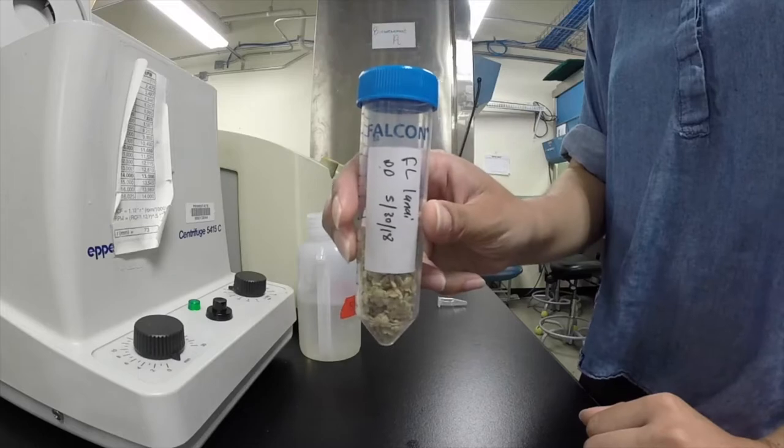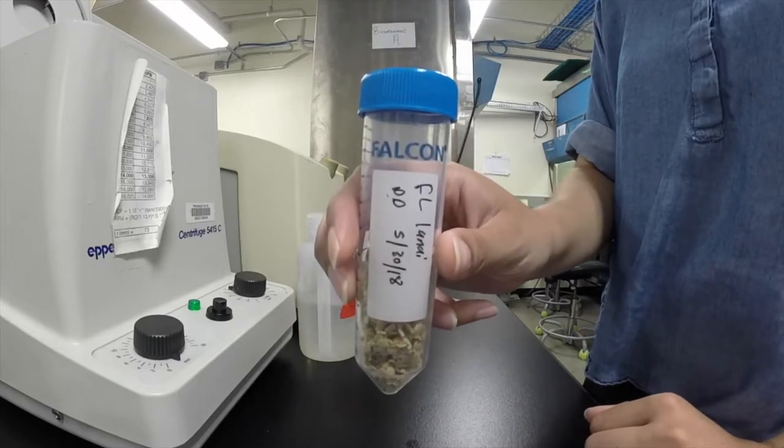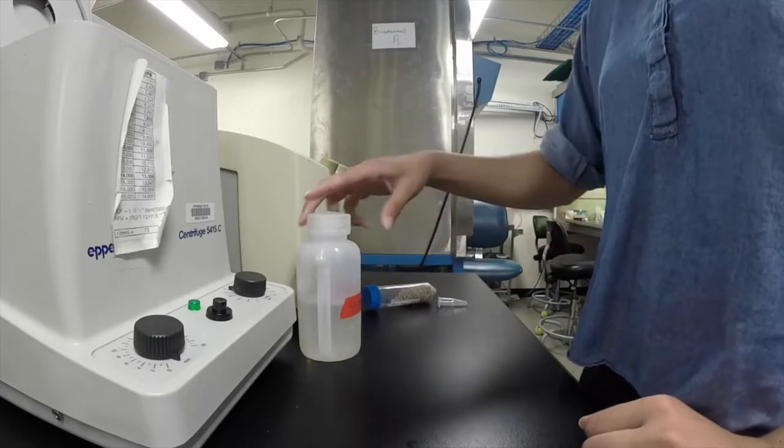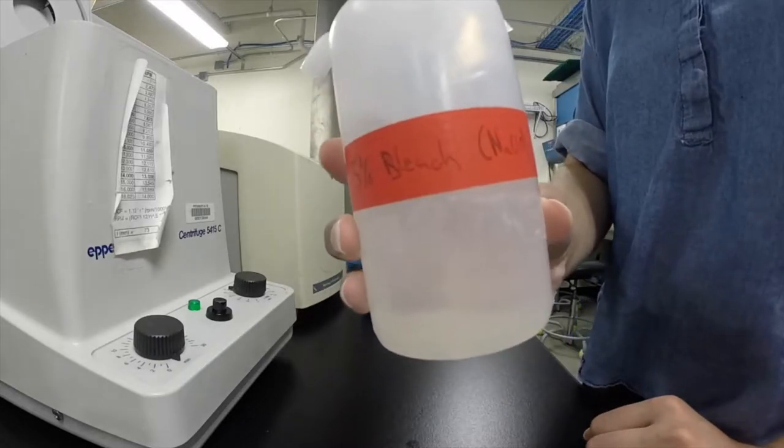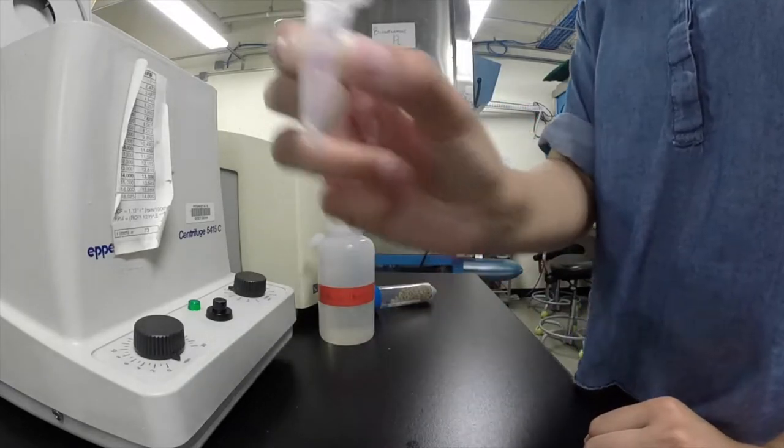We have our seeds that we had gotten from before in the seed fruit. We have some 5% bleach and we have an epi tube.